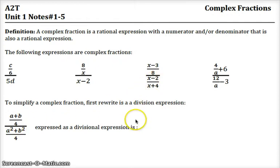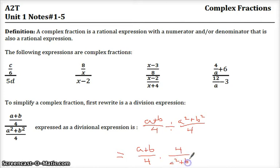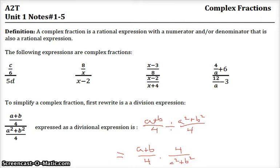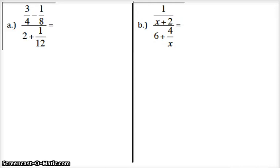So let me deal with this one. We're expressing that as divisional. That would be like taking a plus b over 4 and dividing that by a squared plus b squared over 4, which is, in easier terms, a plus b over 4 times 4 over a squared plus b squared. It doesn't ask me to do it, so I'm not going to finish that one. Alright, let's do some actual ones.